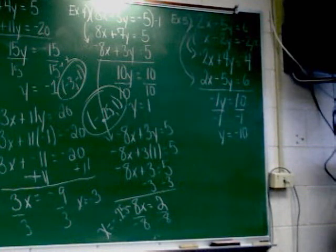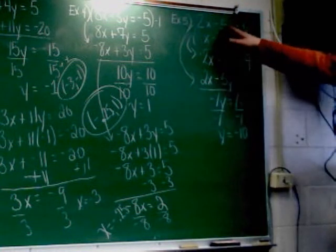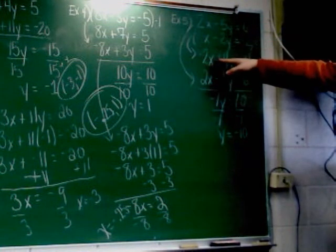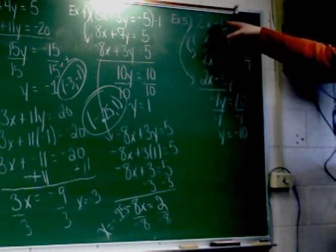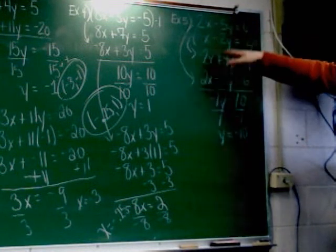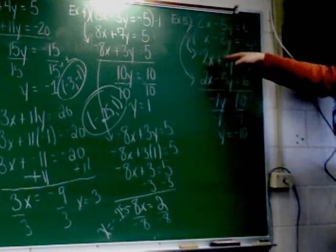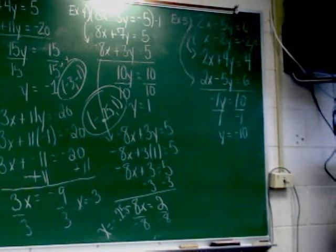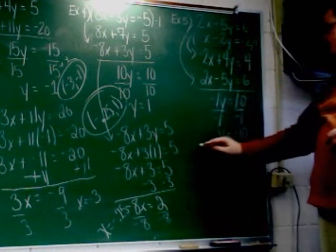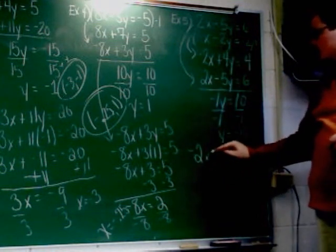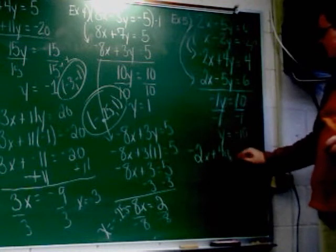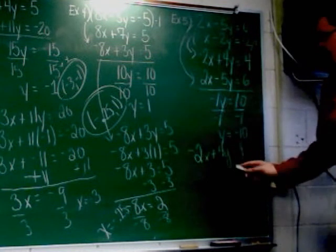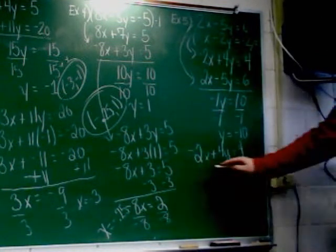Okay. So you can choose now to plug it back into the first, the second, or the third equation. You can choose the fourth, but that's the same as this one. I just recopied. So you can choose to plug it back into the first, the second, or the third. Top, middle, or bottom. Kristen. Top, middle, or bottom equation? Bottom. Bottom. So I've got negative 2x plus 4y equals 4. And I'm going to change y into negative 10.